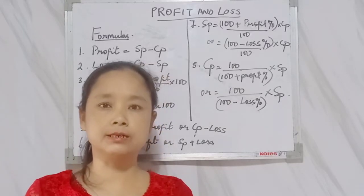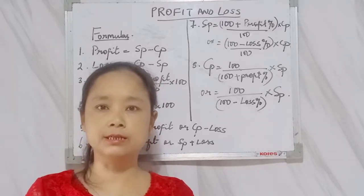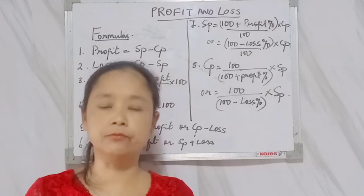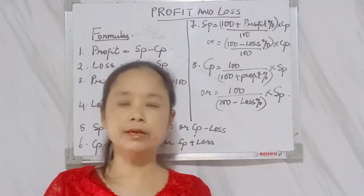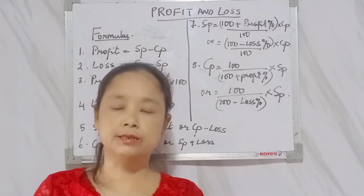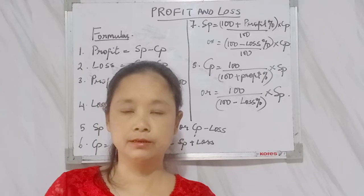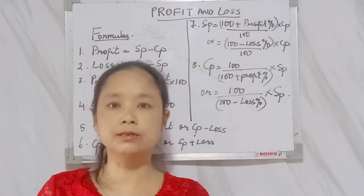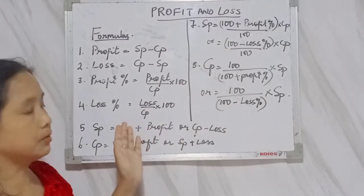Selling price is the money you get from selling any article or goods. Cost price is the money you paid for buying any article. So selling price is the money you get from selling the article, and cost price is the money you paid to the shopkeeper for buying the article. You have to be careful and clear about what is selling price and what is cost price.